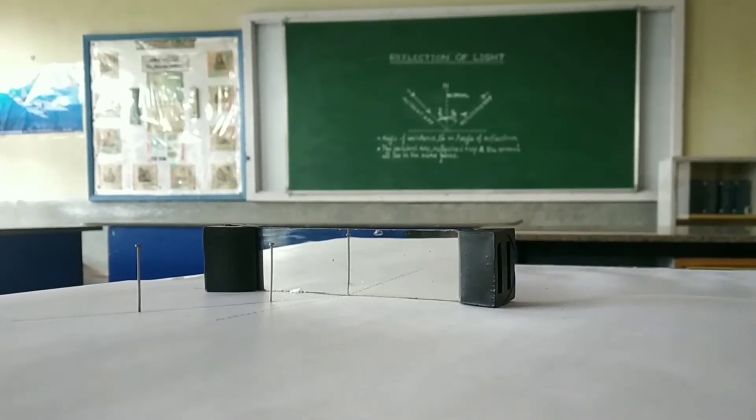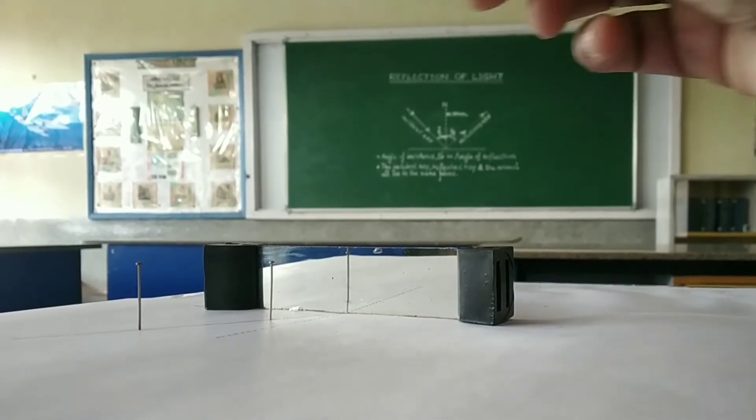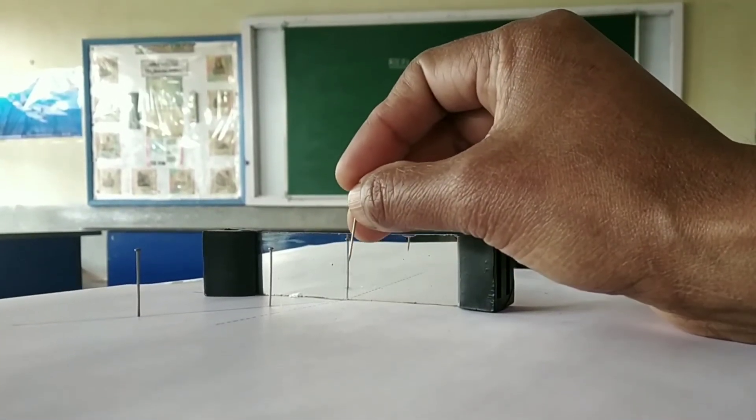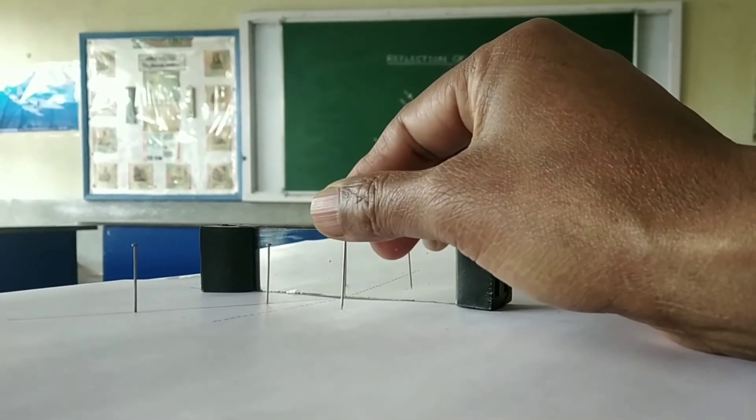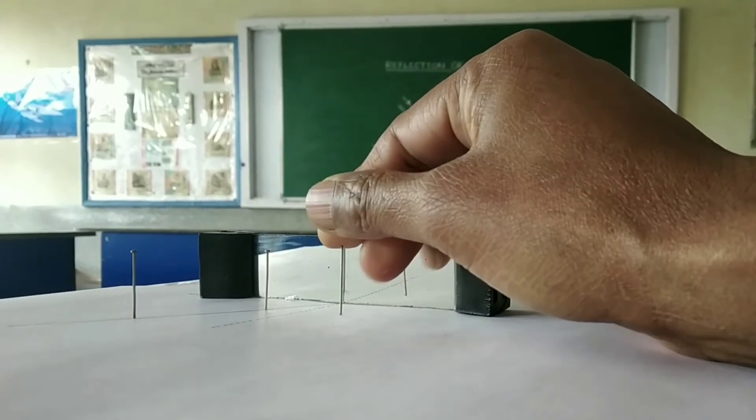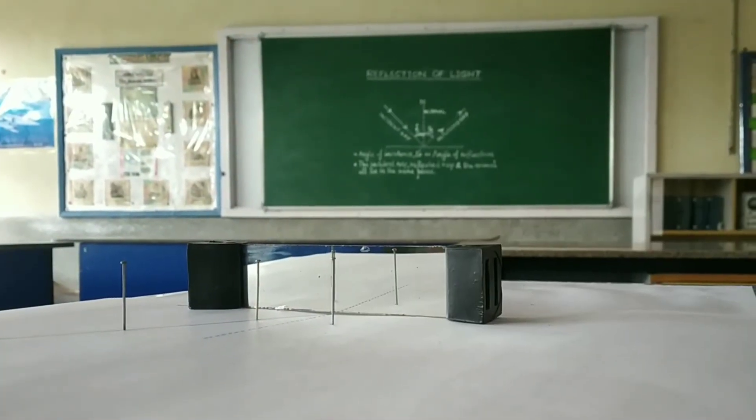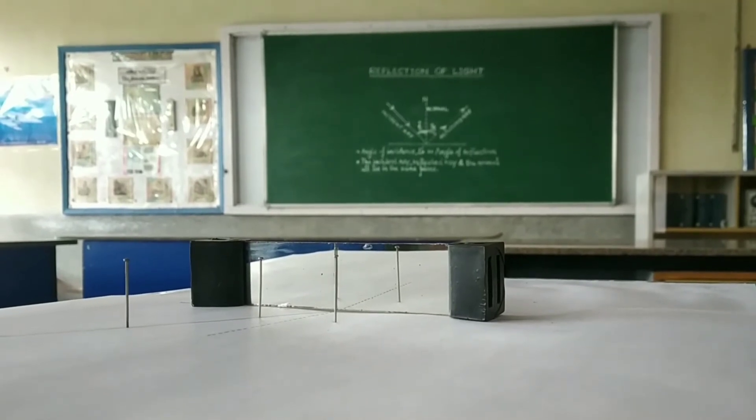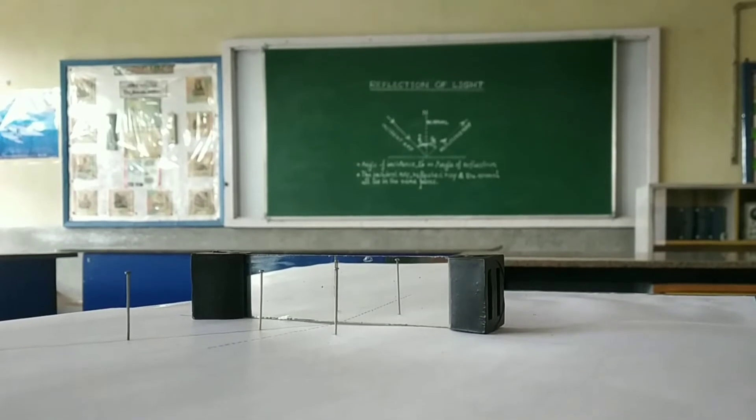Position your eyes in such a manner that the images of the two pins lie on a straight line. Now, we need to fix the third pin and place it properly in such a manner that the feet of this pin along with the images of the two pins on the incident ray lie on the same straight line.